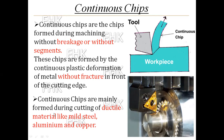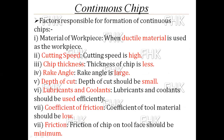Continuous chips are mainly formed during cutting of ductile materials like mild steel, aluminum, and copper. The factors responsible for the formation of continuous chips are: first, ductile workpiece material; second, high cutting speed; and third, a large rake angle — when a large rake angle is used on the tool, continuous chips are formed.